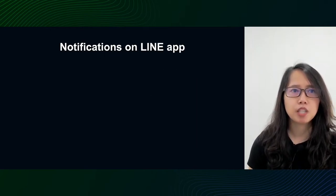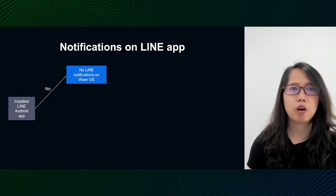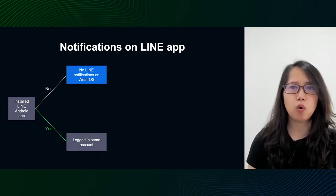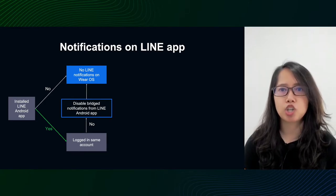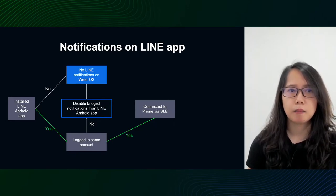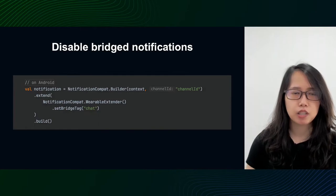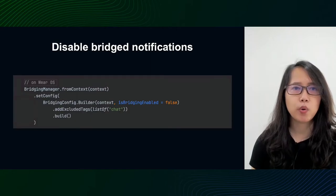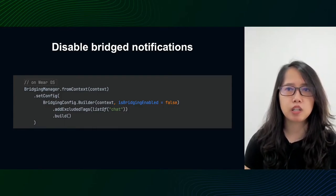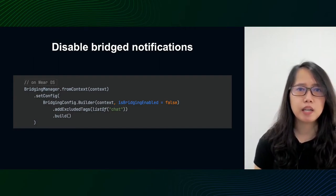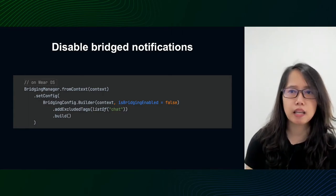In the Live app, we first check whether the Live Android app is installed. If not, the notification is shown directly. Otherwise, we continue to check if the phone and watch are logged in to the same account. If not, we disable bridge notifications. If yes, the notification will be shown if the phone and watch are connected. Otherwise, no Live notification will be shown. To disable bridge notifications on Android, we set bridge tags when creating the notification. And on WearOS, we include the same tags set on the Android app. To implement the notification logic for Live WearOS, we need to get the user ID or login account from Live Android.